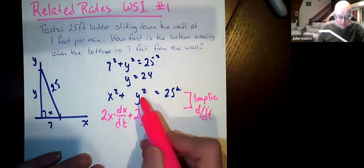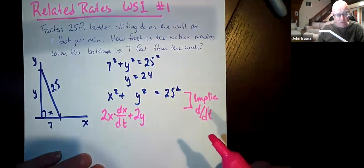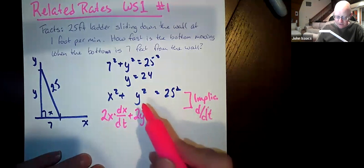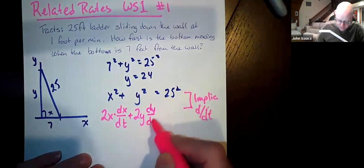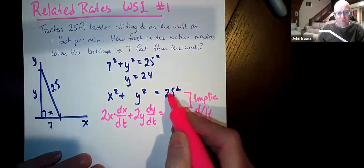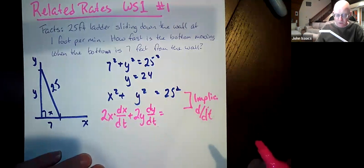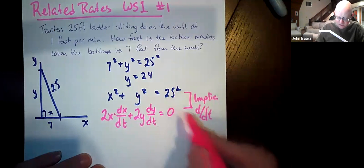Then we have to add to that 2y. And then, again, y is not the variable we're taking the derivative with respect to. So we have to take the derivative of the inside function, which is y, which is going to be dy/dt. And then we have to take the derivative of 25 squared, or 625, which is a constant. So that's 0.